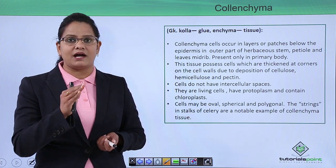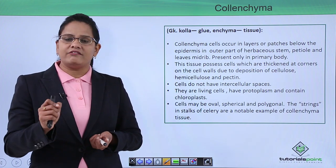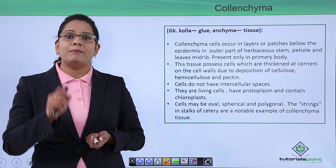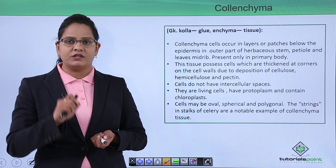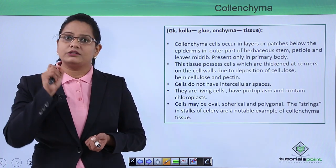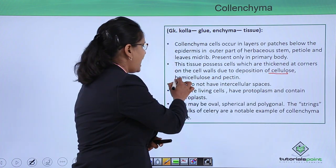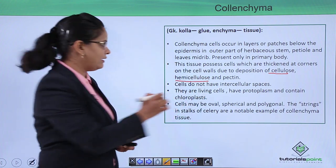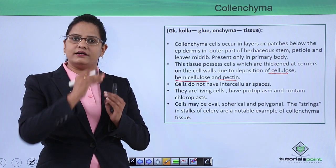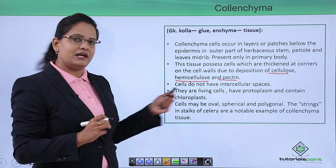Colenchyma cells are living cells, so they have cytoplasm, nucleus, and vacuoles. However, they have thickenings on their outer layer, which form layers or patches. These thickenings are made up of cellulose, hemicellulose, and pectin.